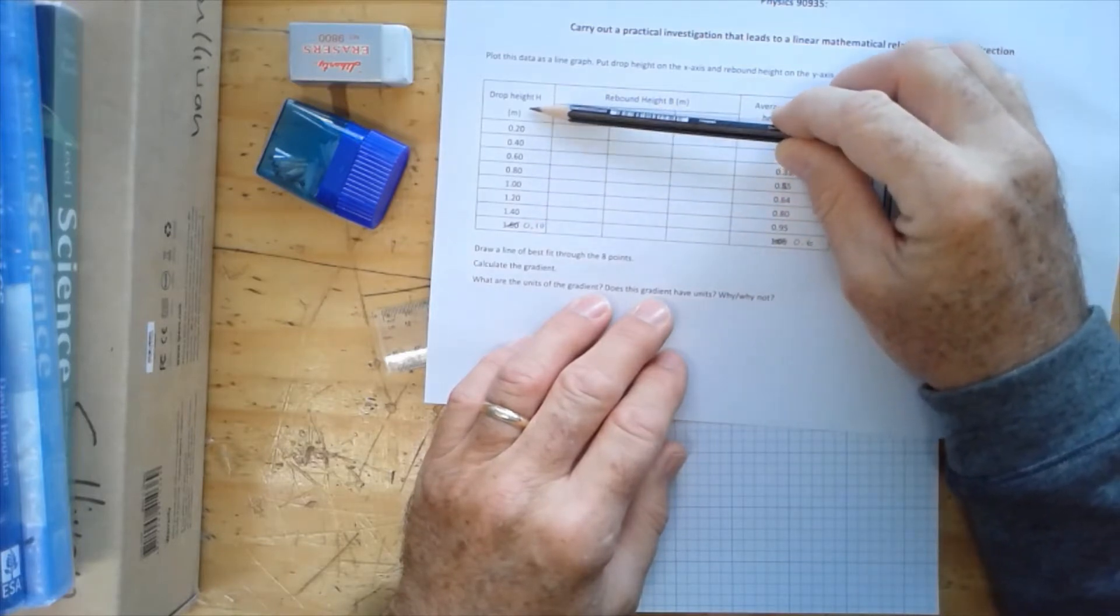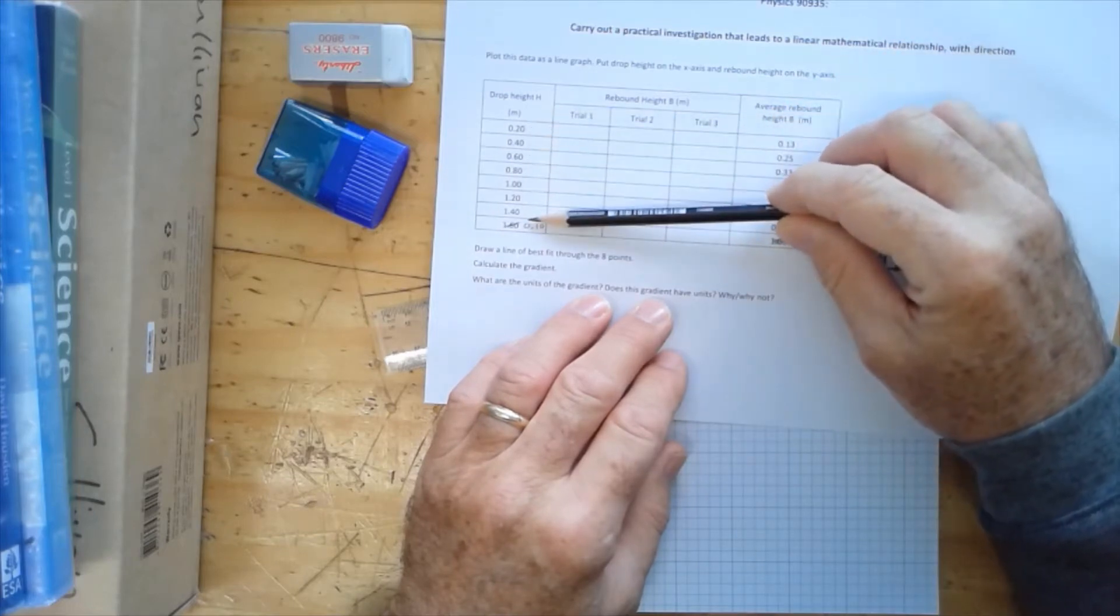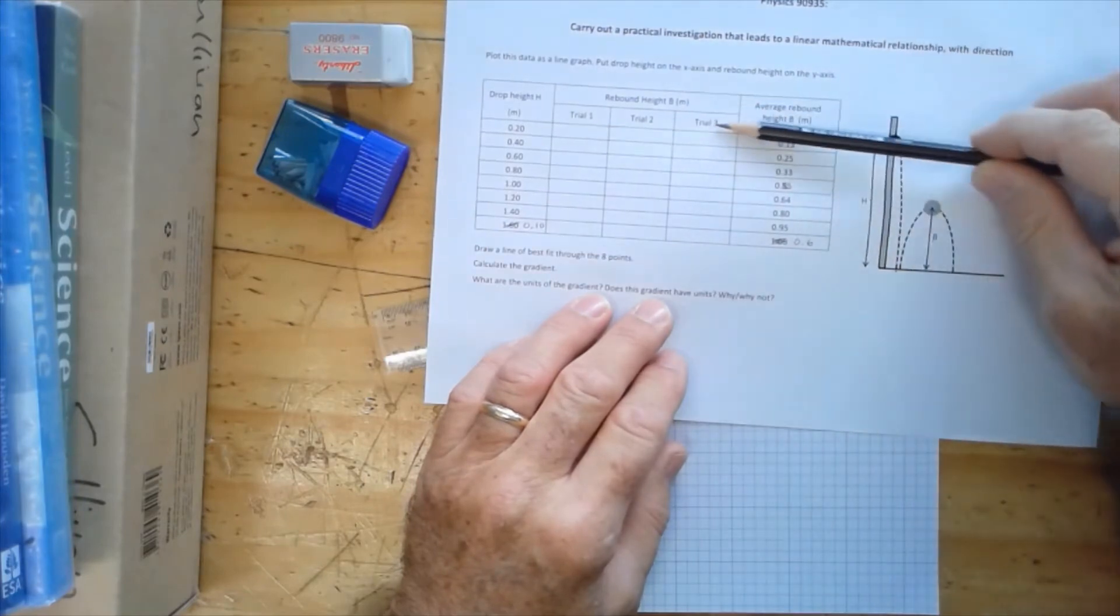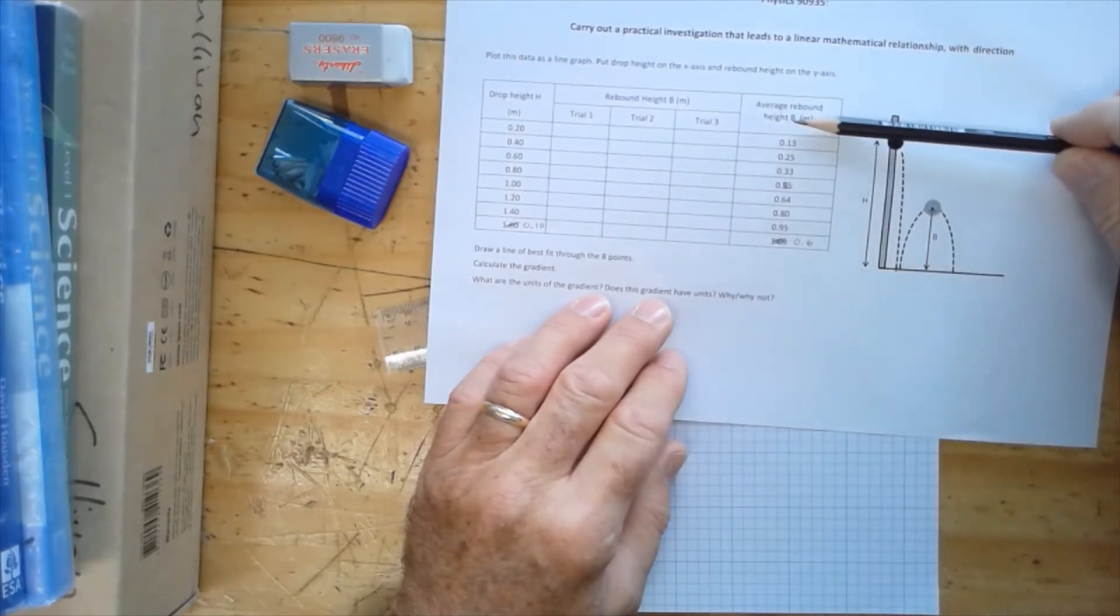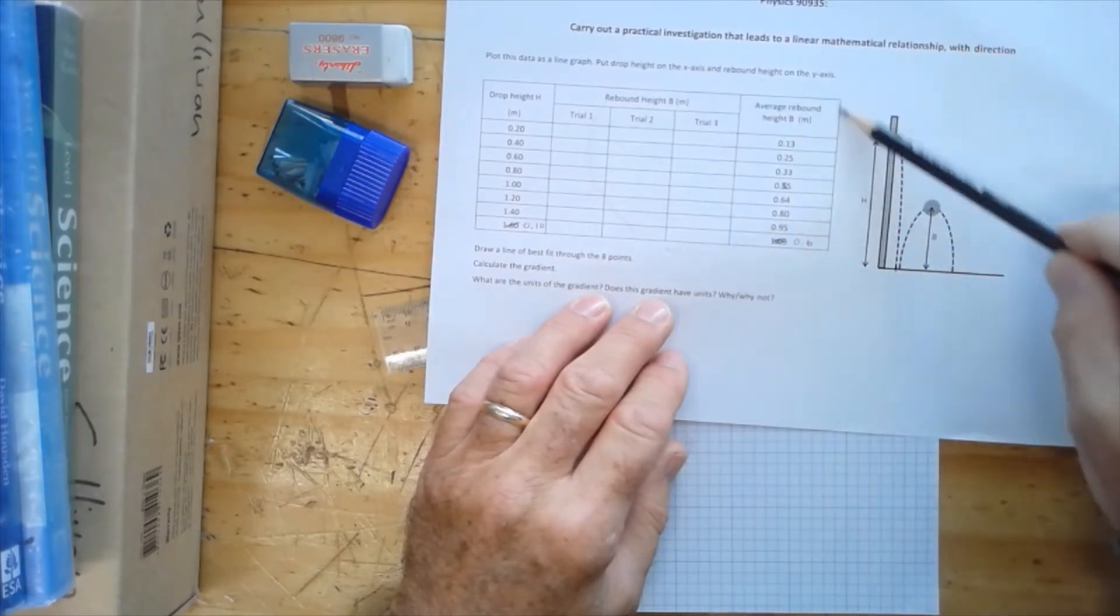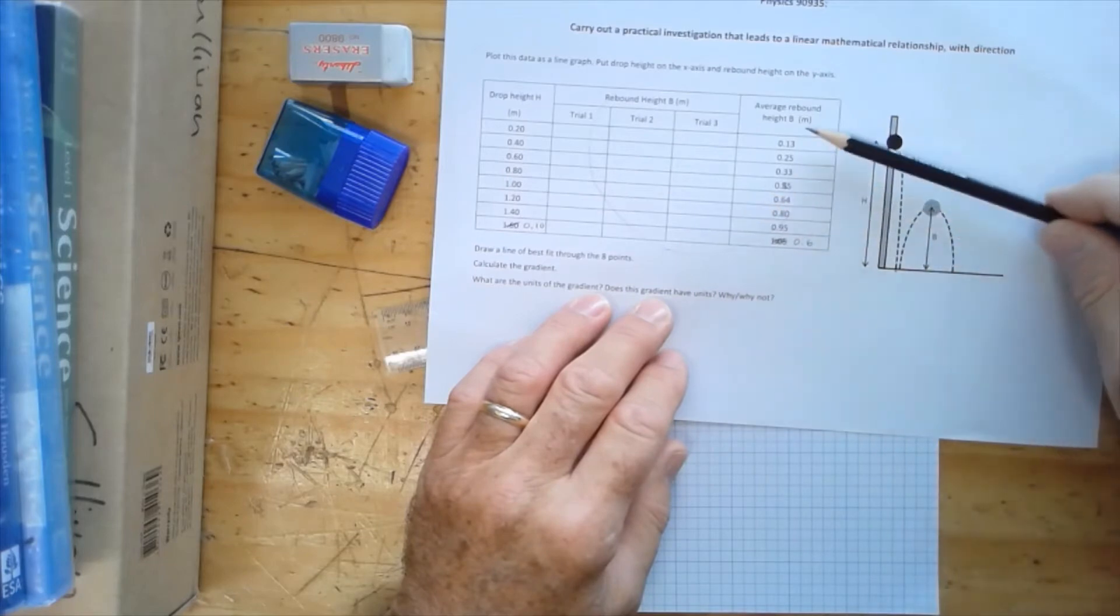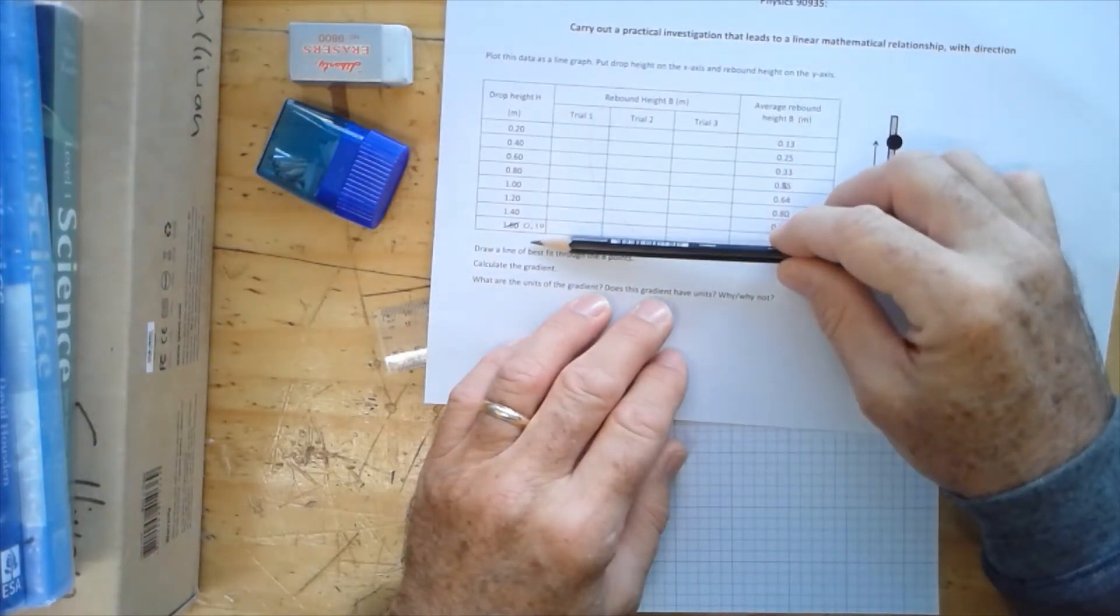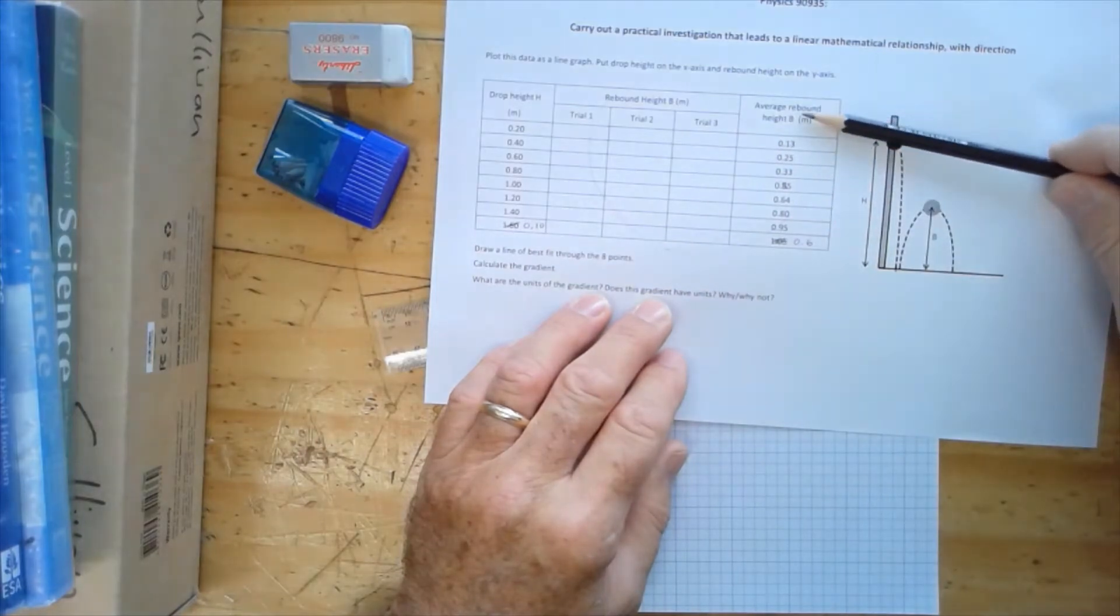With our independent variable here, which is our drop height. That's the variable that we've changed and we've got our seven readings here. And then over here we've conducted the experiment and we've got our rebound heights. This is our dependent variable, all of this part of the table is our dependent variable. Independent variable, our drop height, dependent variable, the rebound height.